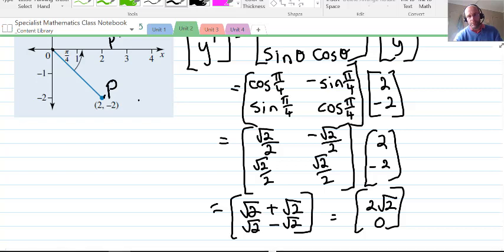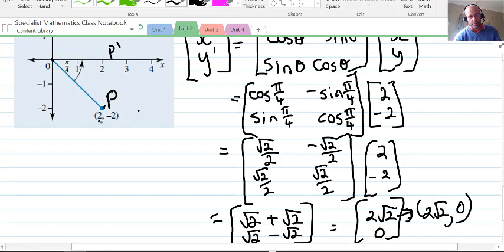Now 2√2, 0 is the new point. That makes sense because any point that's got the same magnitude for x and y will create a 45 degree angle or π/4 radians. If we're rotating it that way, it will bring it back to a y value of 0, because it'll sit on the x-axis. So that's a reasonable answer.